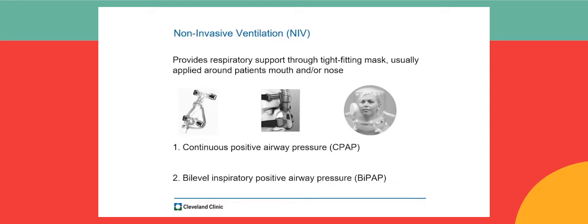The second mode is BiPAP — bi-level inspiratory positive airway pressure, or non-invasive pressure support ventilation — which involves the application of preset inspiratory and expiratory pressures. These may be time-triggered by preset controls or flow-triggered by the patient's airway pressure. The recommended initial inspiratory positive airway pressure should be about 10 cmH₂O, while the expiratory pressure should be about 5 cmH₂O. You can increase the inspiratory pressure every 3 to 5 minutes. Please be aware that a pressure support level of about 20 cmH₂O may eventually be maintained during BiPAP application, but this depends on your patient.